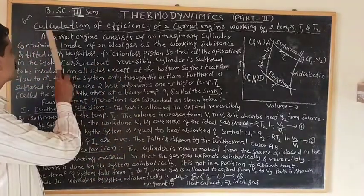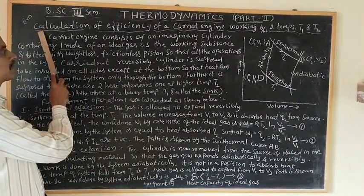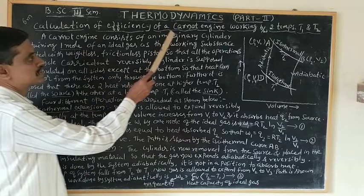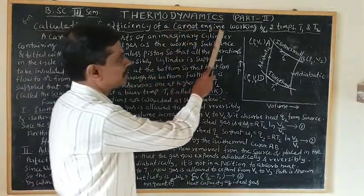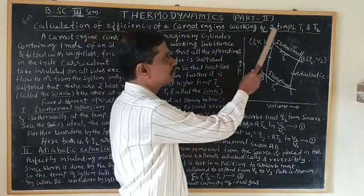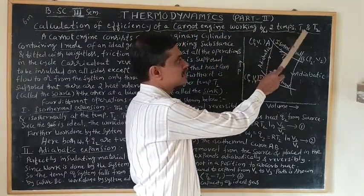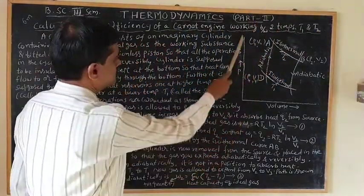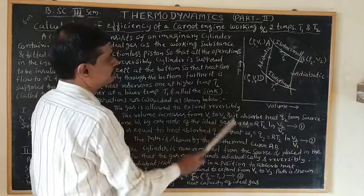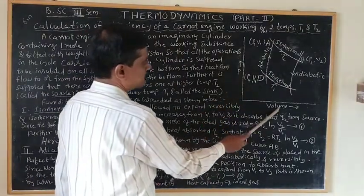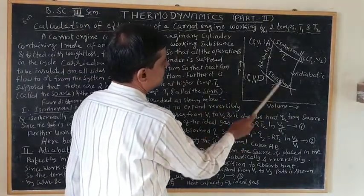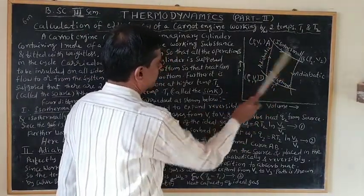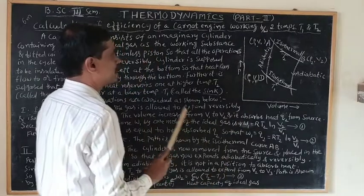Now, for 4 marks or 6 marks, I will ask the question: how to calculate the efficiency of a Carnot engine working between two temperatures T1 and T2. For this, here is the diagram — pressure against volume — where we carry out 4 different operations.